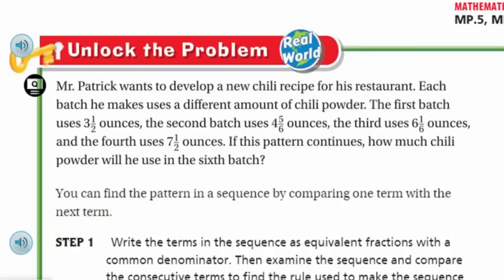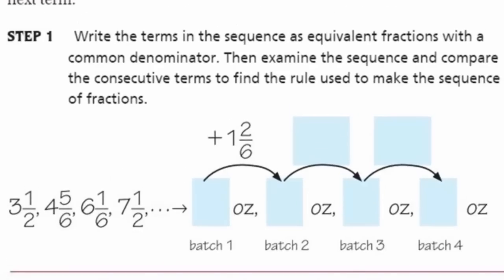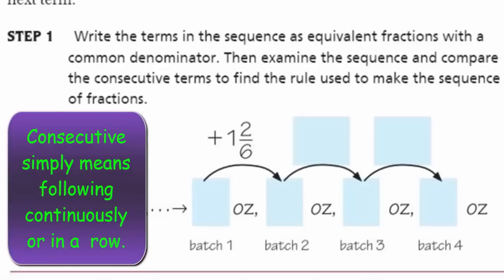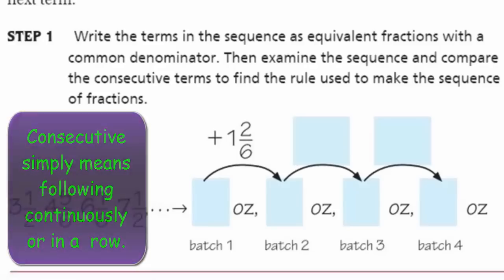A term. That's right. We talked about a term. A number in between operational signs. Two plus three. Two is a term. Three would be a term. Step one says write the terms in the sequence as equivalent fractions with a common denominator. Then, examine the sequence and compare the consecutive terms to find the rule used to make the sequence of fractions.